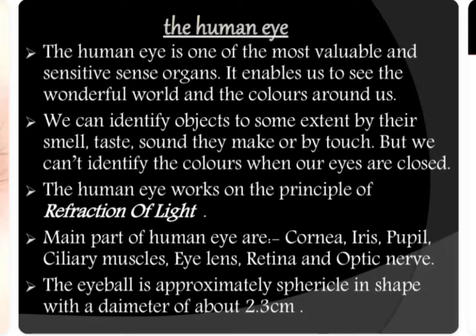The human eye is one of the most valuable and sensitive organs, as we already know. It enables us to see the wonderful world and colors around us. We can identify objects to some extent by their smell, taste, sound they make, or by feeling or touching them — but we cannot identify colors when our eyes are closed.